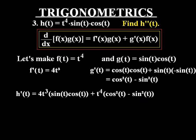h prime of t ends up being 4t cubed multiplied by the normal of the second plus the normal of the first multiplied by cos squared of t minus sine squared of t. And now, at this point, there's a little bit of simplification that can be done, so let's investigate this simplification.